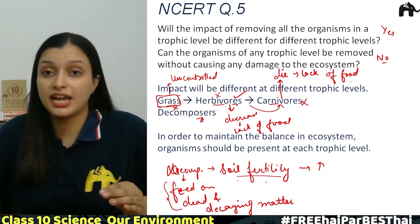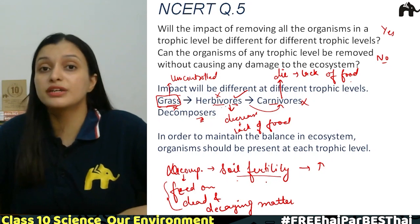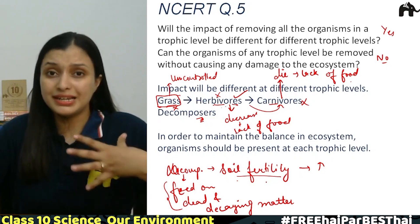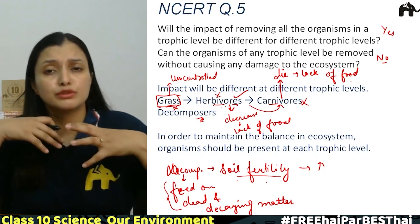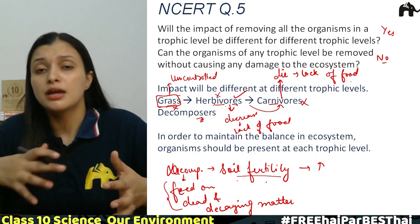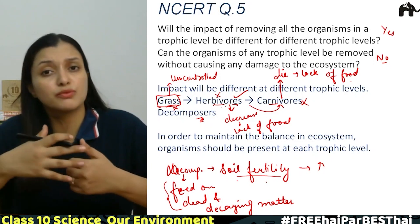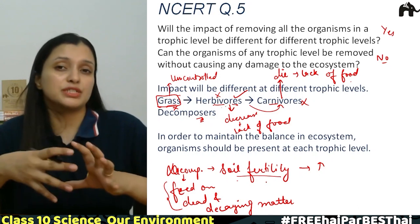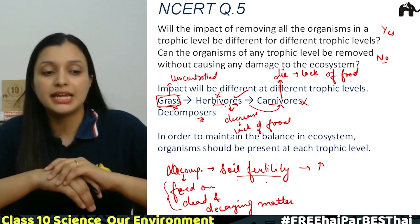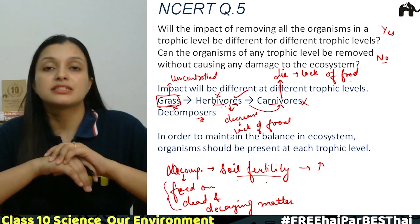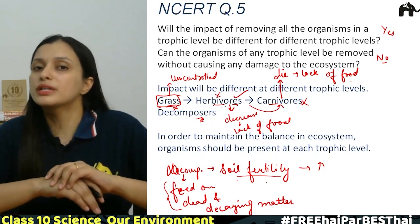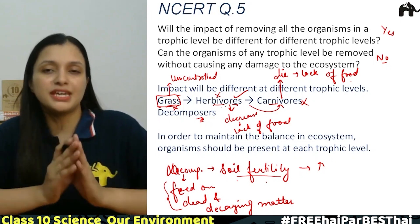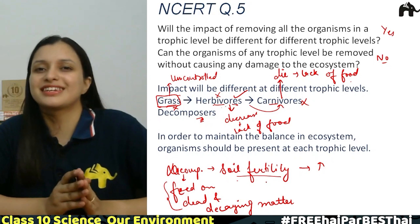लेकिन अगर हमने decomposers को ही हटा दिया तो animals degrade नहीं होंगे — land पर dead bodies के ढेर लग जाएंगे, वो decompose नहीं होंगे और बहुत stinky atmosphere हो जाएगा। इसलिए कोई भी organism को अगर हम हटाते हैं तो उसका ecosystem पर कोई न कोई effect ज़रूर होता है।